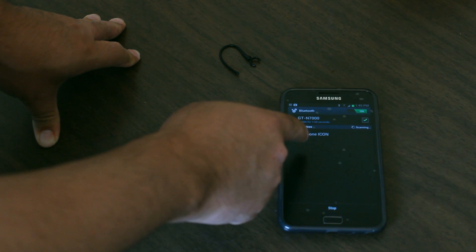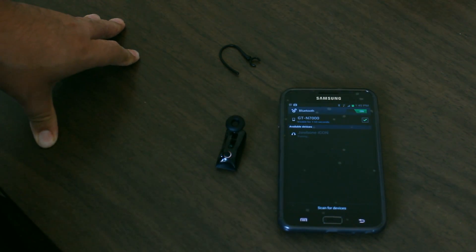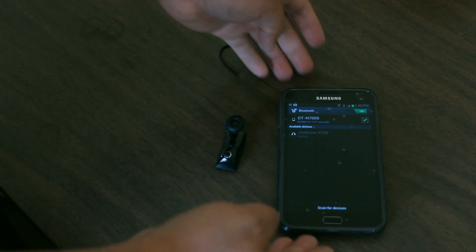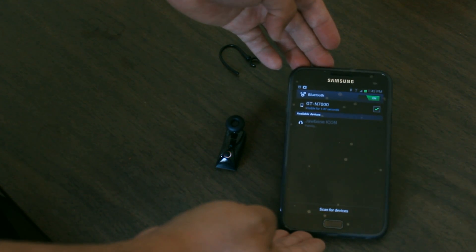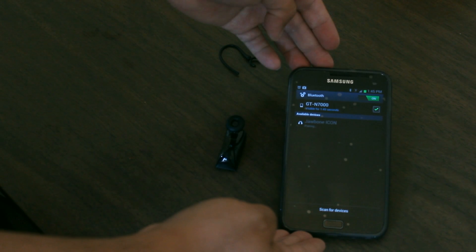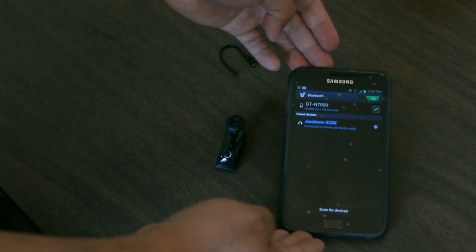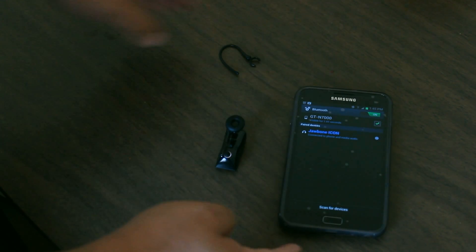Now we press on the Jabon Icon for the Bluetooth headset and it will start pairing. Eventually it starts connecting, and it has been connected to the phone and the media audio.